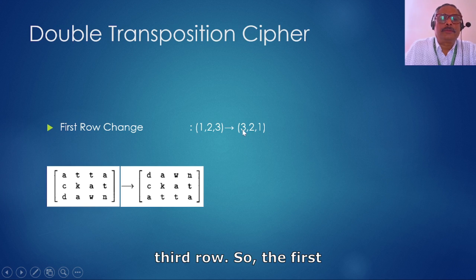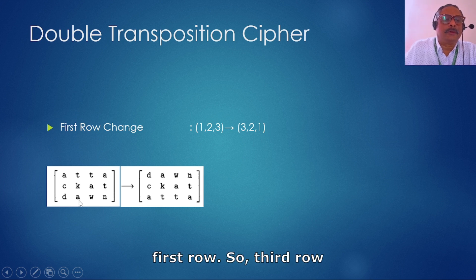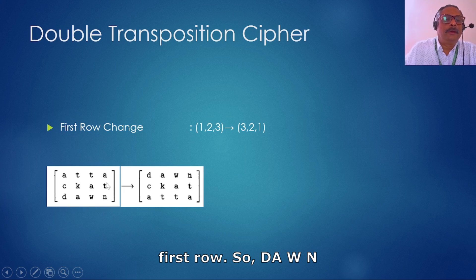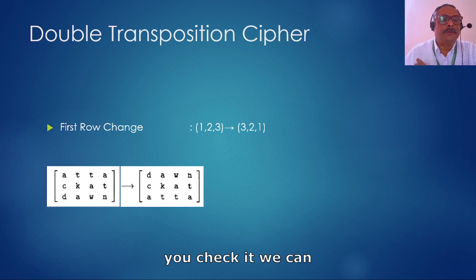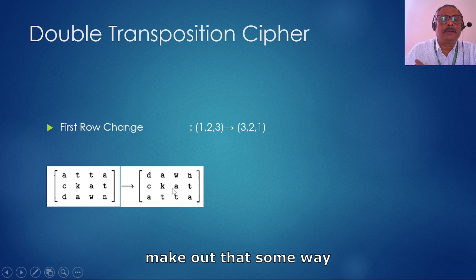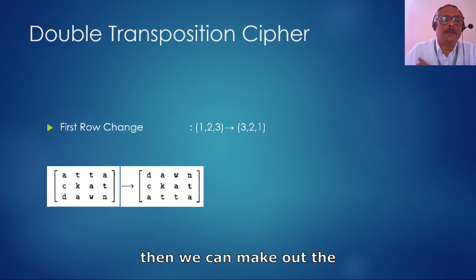Then we make changes to the rows. The first row 'ATTA' goes to the third row, so the first row becomes the third row. The second row remains in the second row, and the third row 'DAWN' goes to the first row. Now we can see that the two matrices are totally different, but still, row-wise, we can make out the original text by moving rows up and down.